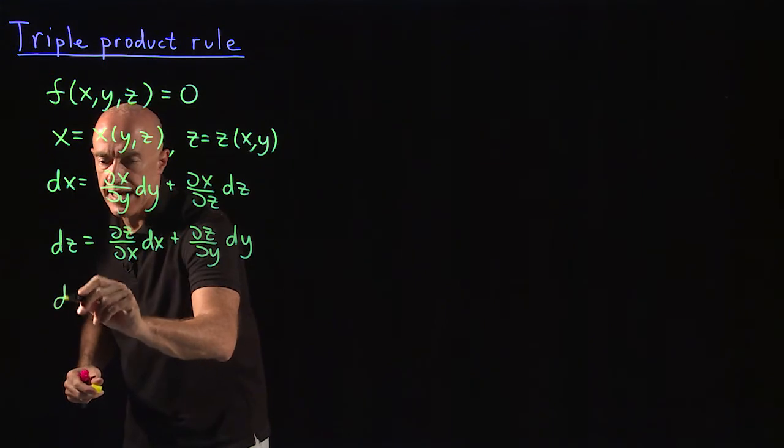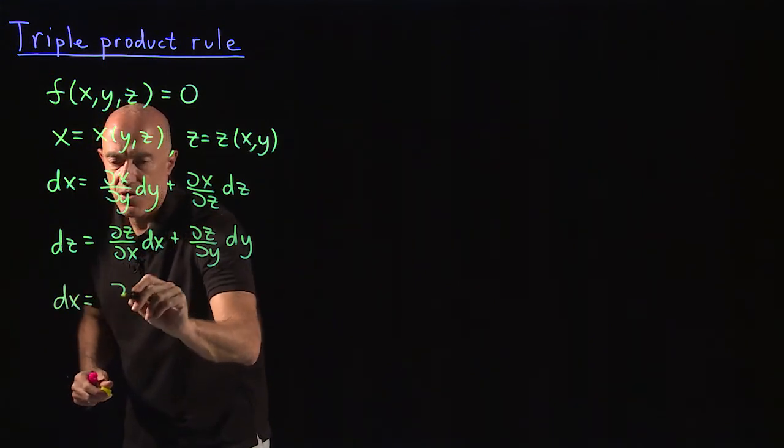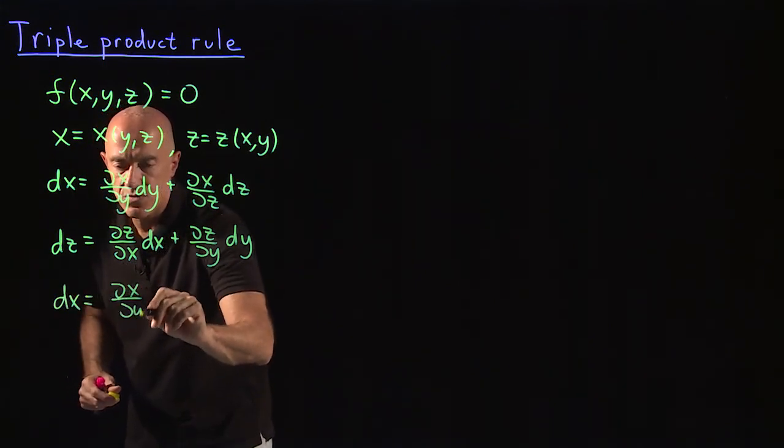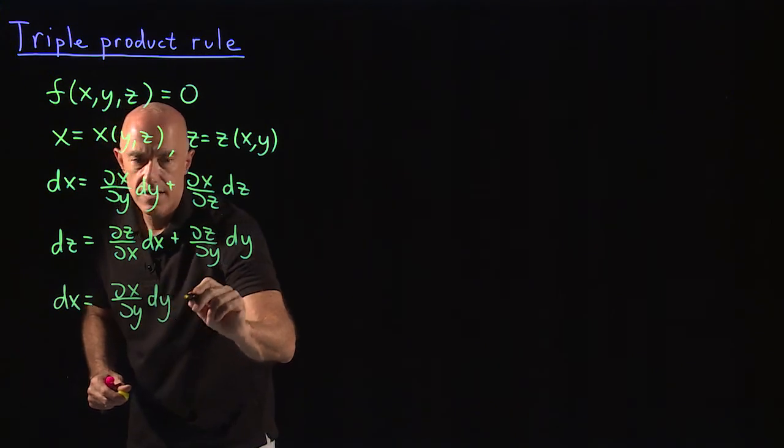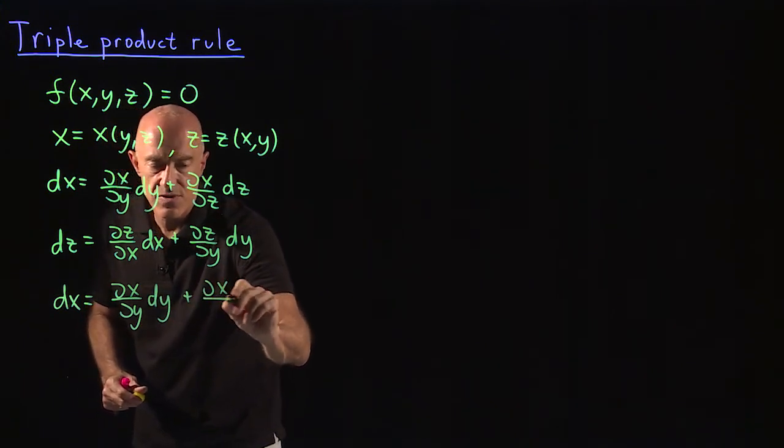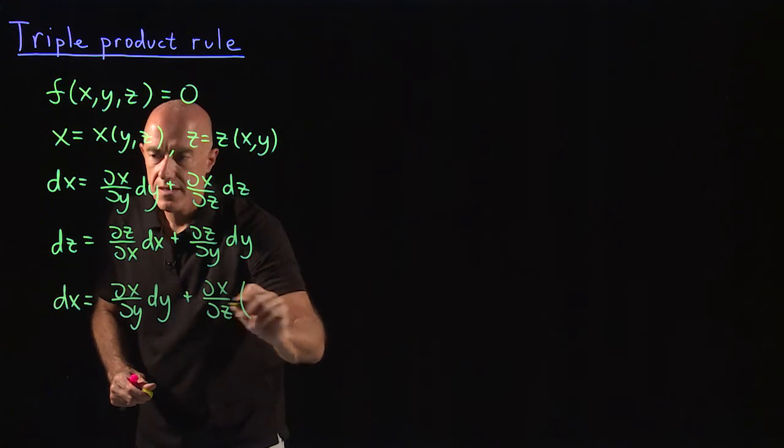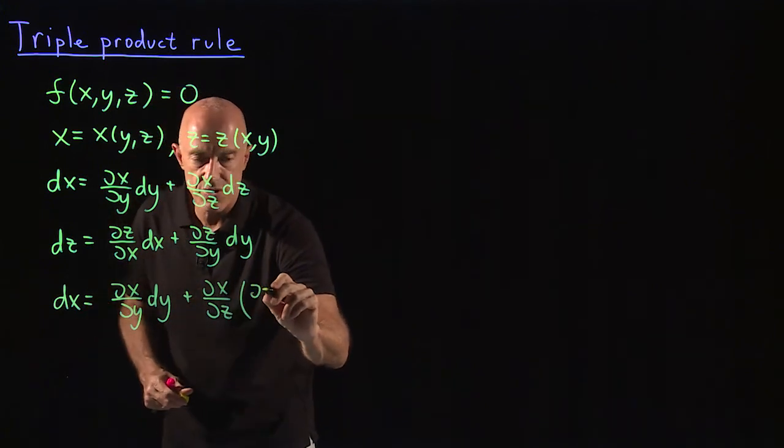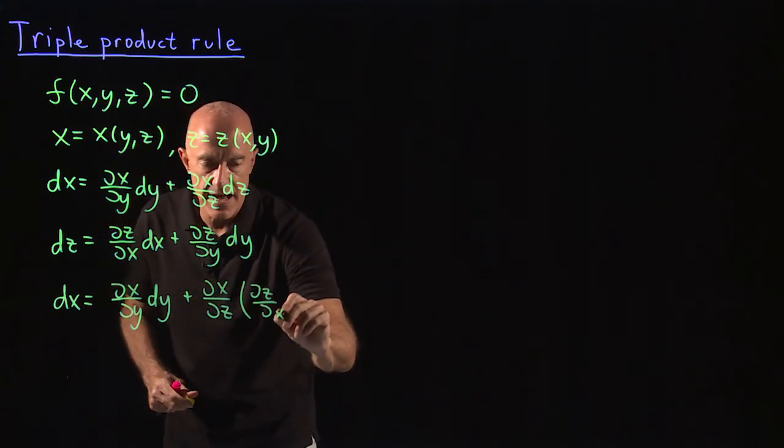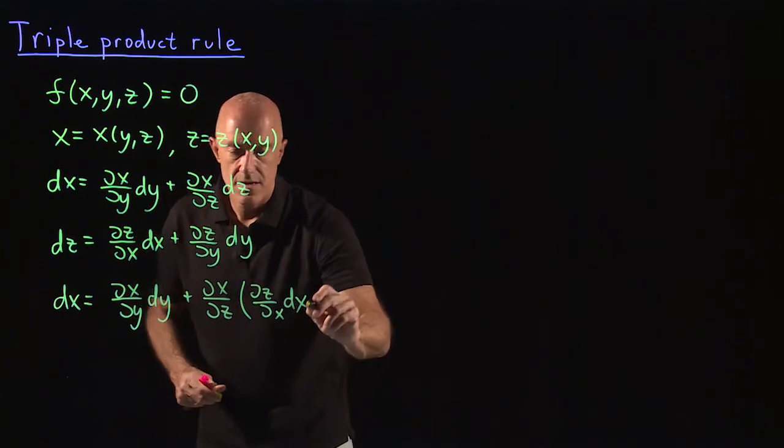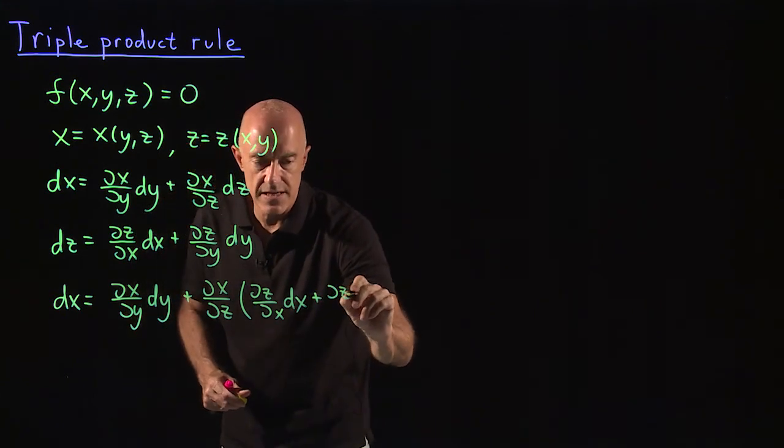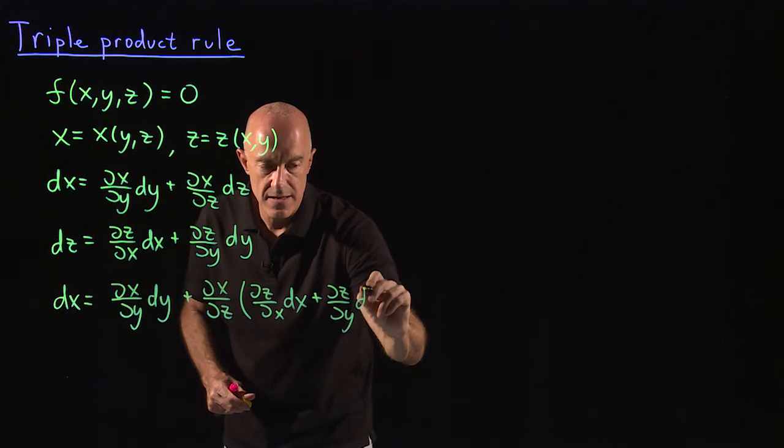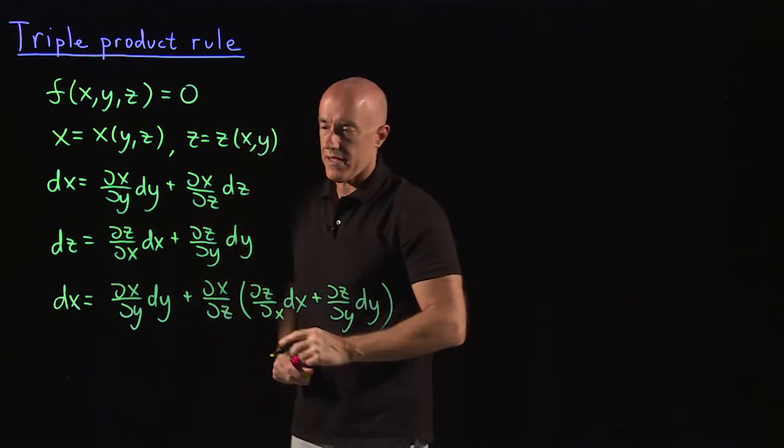So if we do that, we end up with dx equals partial of x with respect to y dy, plus partial of x with respect to z, times dz, which is partial of z with respect to x dx, plus partial of z with respect to y dy.